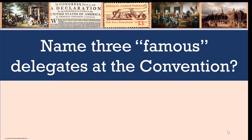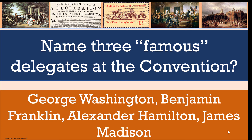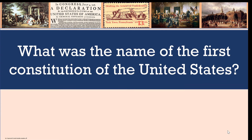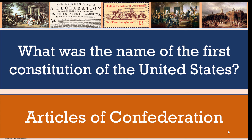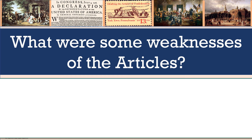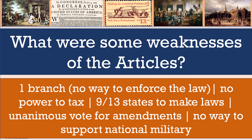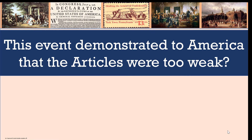Name three famous delegates at the convention. George Washington, Benjamin Franklin, Alexander Hamilton, James Madison. Note that Thomas Jefferson and John Adams weren't there. What was the name of the first Constitution of the United States? The Articles of Confederation. What were some weaknesses? They only had one branch, no way to enforce the laws they made, no power to tax so they were broke. It took nine out of 13 states to make laws, a unanimous vote for amendments, and there was no way to support a national military. Shays' Rebellion demonstrated to America that the Articles were too weak.